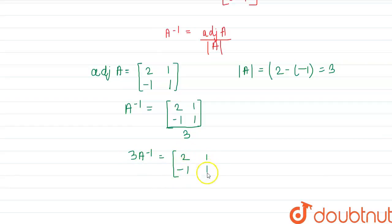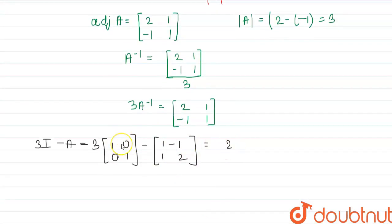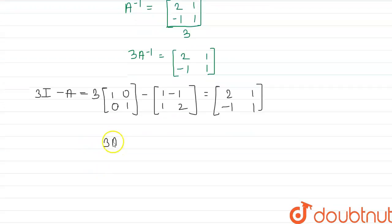(2, 1; -1, 1). Now we can check our options one by one. Option one is 3I minus A. So 3 times I, that is (3, 0; 0, 3), minus A is (1, -1; 1, 2). That is equal to 3 minus 1, that is 2; 0 minus (-1), that is plus 1; 0 minus 1, that is -1; 3 minus 2, that is 1. So this is equal to 3A inverse. So 3A inverse is equal to 3I minus A. So option one is correct answer.